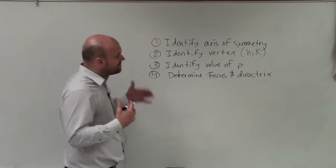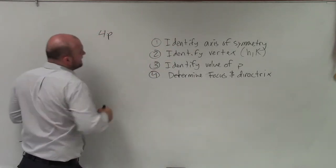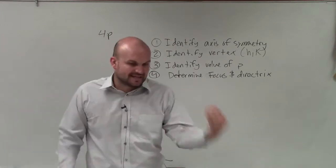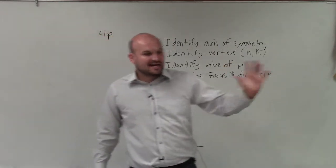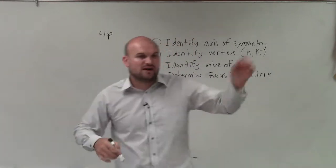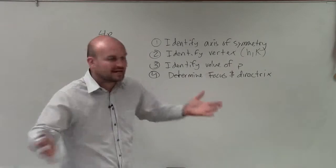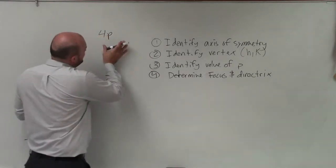The next thing is identify p. And for either equation, you have 4p being the coefficient of your linear term, right. If you have like x minus h squared, then it's 4p times y. If you have y minus k squared, then it's 4p times x on the other side of the equation. So we want to identify the value of p.